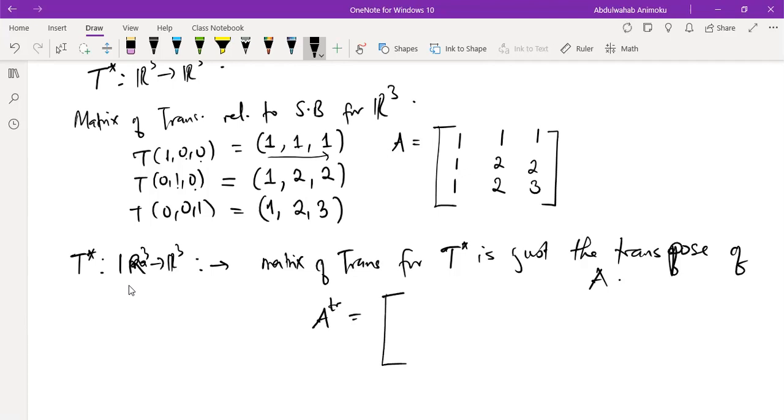As you can see, if you observe, you'll see that this matrix is actually symmetric. And we're going to learn that a matrix of transformation being symmetric means that transformation is self-adjoint. So T is self-adjoint.